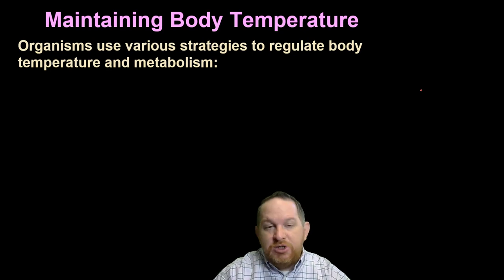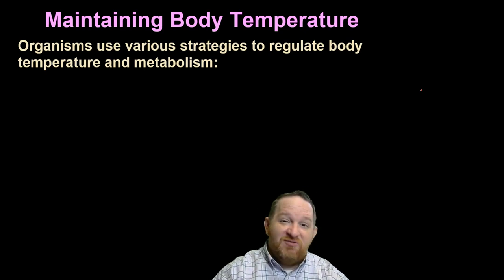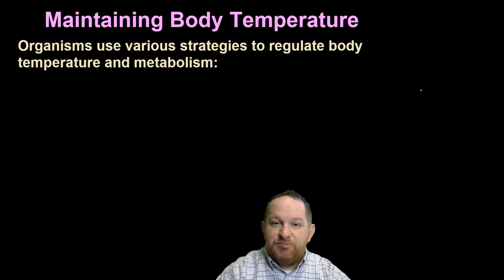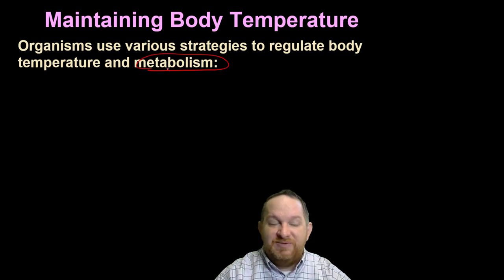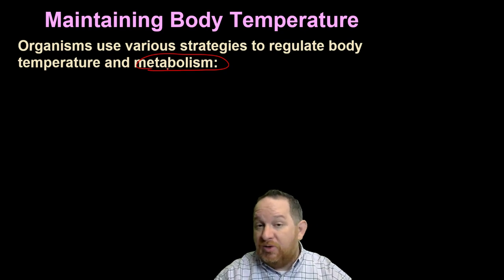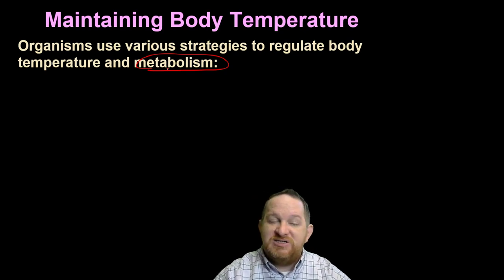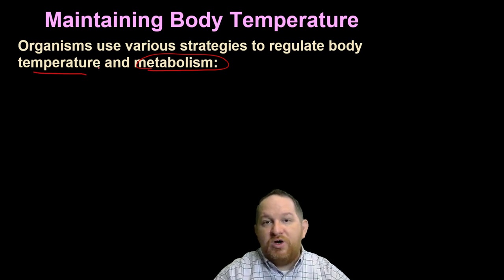The first thing I want to mention is maintaining body temperature. There are different strategies that animals or organisms have evolved to regulate their body temperature and their metabolism. Metabolism is breaking down food, breaking down chemicals into other chemicals or building up other chemicals.